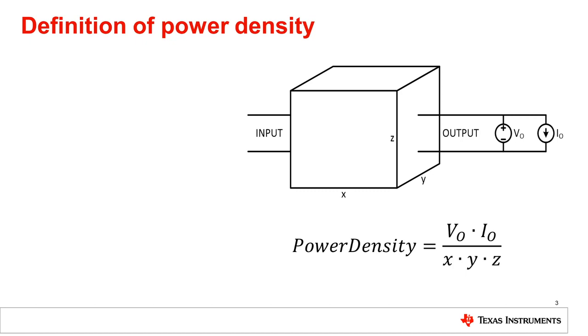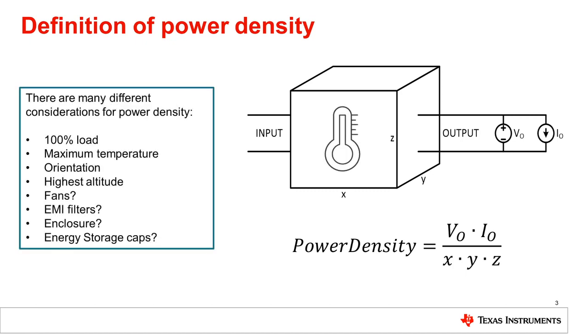The output power in this case corresponds to the continuous output power the unit can deliver under worst-case environmental conditions. The relevant power capability may be affected by the combination of ambient temperature, maximum acceptable case temperature, orientation, altitude, and expected lifetime.